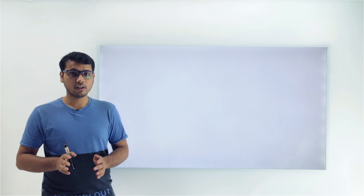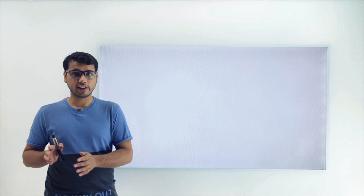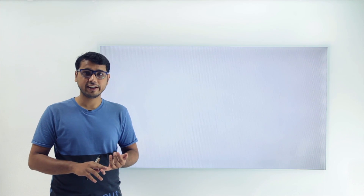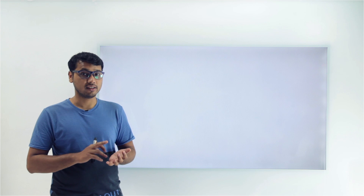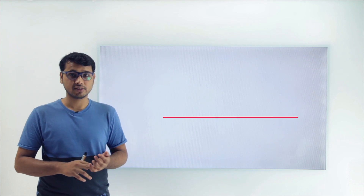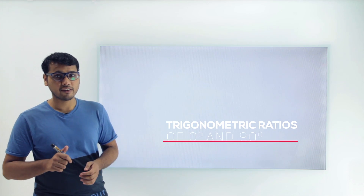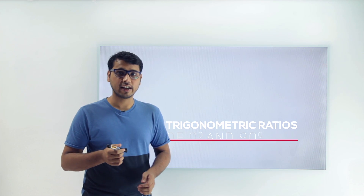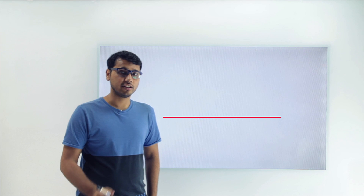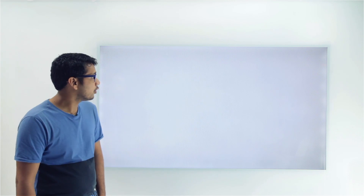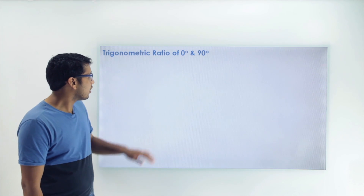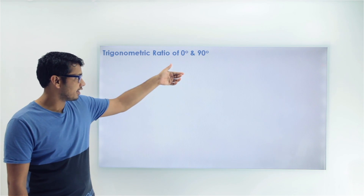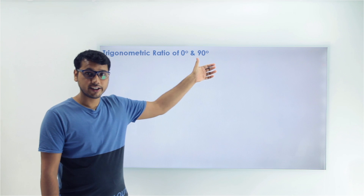Since we had understood the trigonometric ratios for angle 45 degrees, angle 30 degrees and angle 60 degrees, now let's have a look at the last angles — that is 0 degrees and 90 degrees. So we are looking at the trigonometric ratios for 0 degrees and 90 degrees.